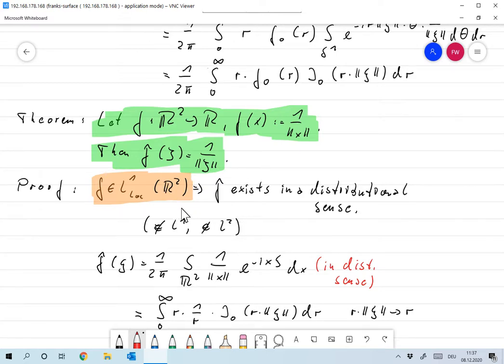And it's not completely clear because that function is obviously not in L1 and it's not in L2, but for R2, it's in L1 log. So we already know that it exists as a distribution. And so in a distributional sense, also there exists the Fourier transform of that F. So we won't have to care about existence of integrals.